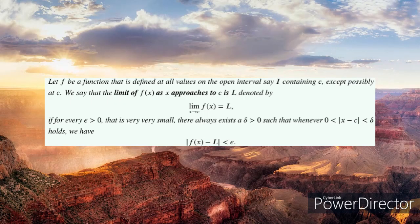Recall that given a function f defined at all values in an open interval containing c — except possibly at c — we say that the limit of this function as x approaches c is L, if for every epsilon that is significantly very small, there always exists a delta greater than 0 such that the absolute value of x minus c is less than delta, whenever the absolute value of f(x) minus L is less than epsilon.